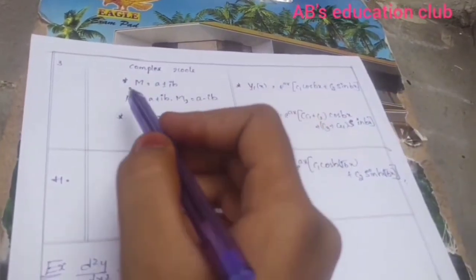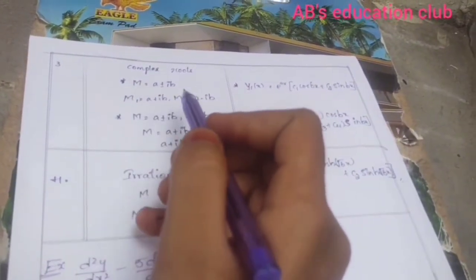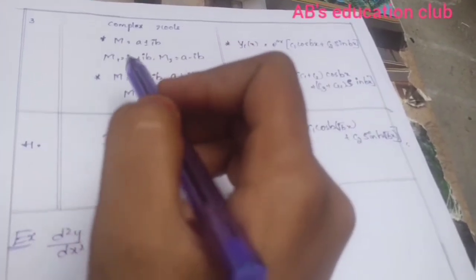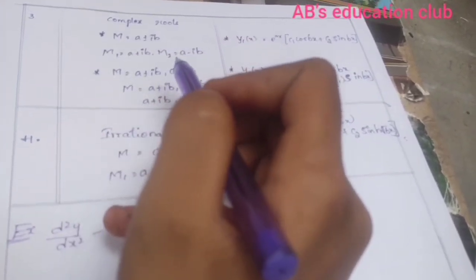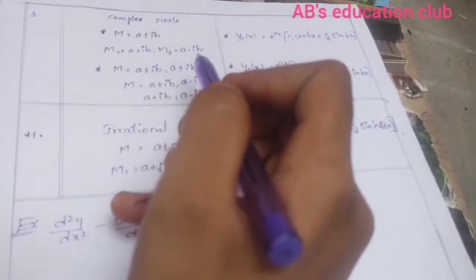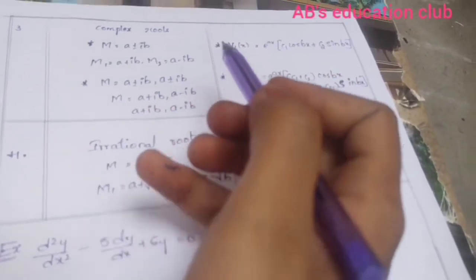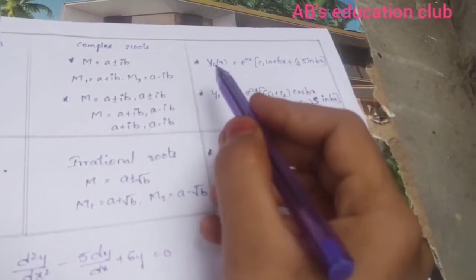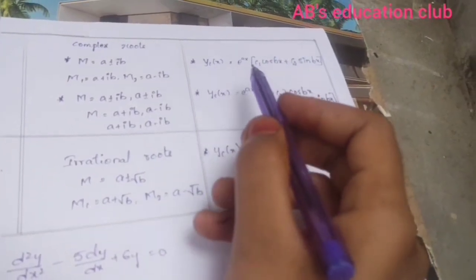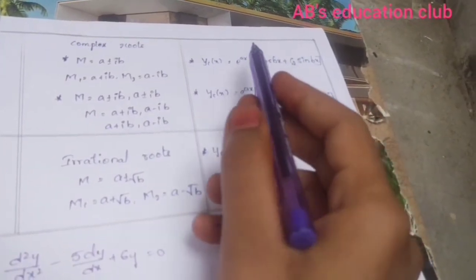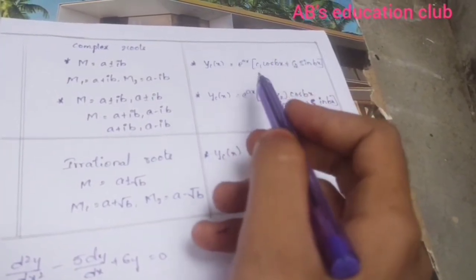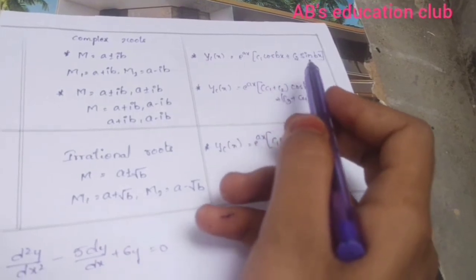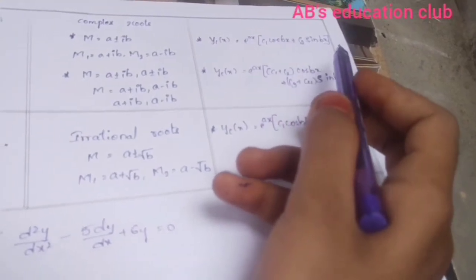Case 3: Complex roots. If m = a ± ib, meaning m1 = a + ib and m2 = a − ib, the complementary function is yc(x) = e^(ax) · (c1·cos(bx) + c2·sin(bx)).